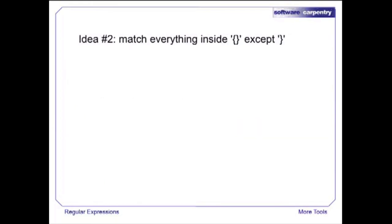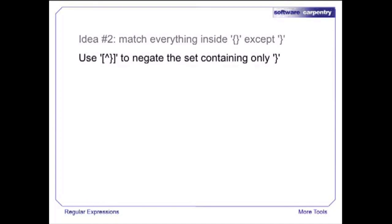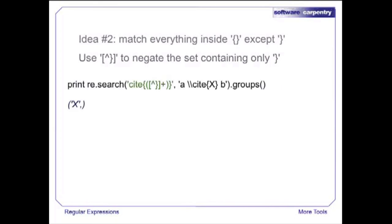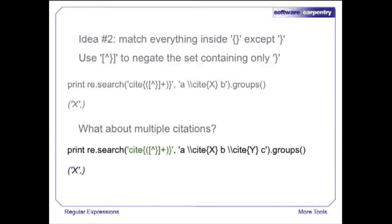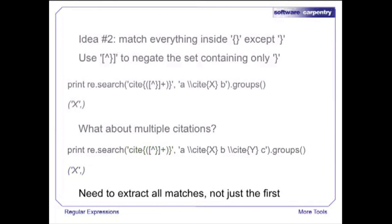It seems to work in one simple case, but with multiple citations on a single line, we're capturing text between citations. The reason is that regular expression matching is greedy — it matches as much text as it can. The dot in dot-plus will match all characters from the first curly brace to the last one, including intervening citations. The solution is to have the regex match everything except a closing curly brace. If the first character in square brackets is a circumflex, the set is negated — it matches everything except the listed characters. So [^}] matches every character except a closing curly brace.